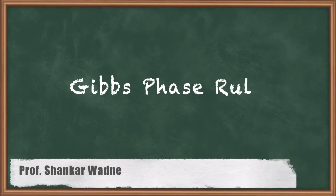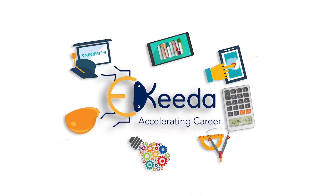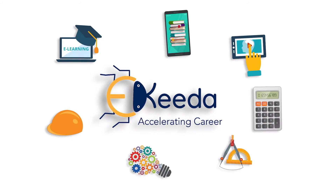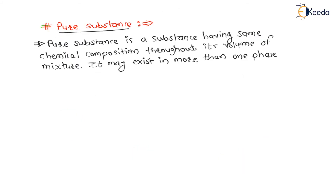Hello my dear students. In this lecture we are going to understand pure substance and Gibbs phase rule concept. Pure substance is a substance having the same chemical composition throughout its volume of mixture, meaning the chemical formula is the same throughout.